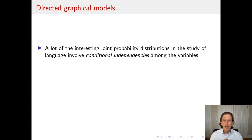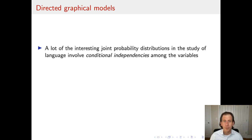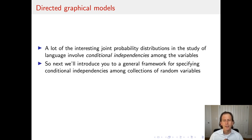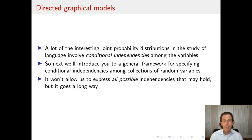A lot of the interesting joint probability distributions in the study of language involve conditional independencies among the variables. We've seen some of these before, and we'll see more now. We're going to introduce a general framework for specifying these conditional independencies among random variables. It's not going to express all possible independencies — we'll look at an example of independencies that cannot be expressed in the framework — but this framework does go a long way and there are many valuable applications.